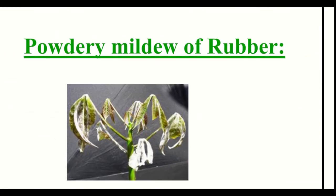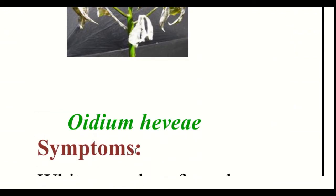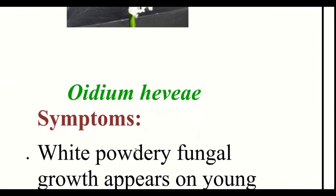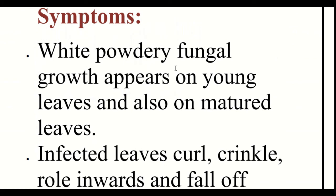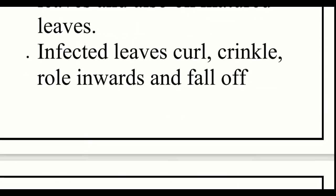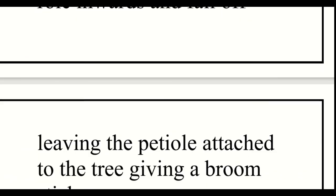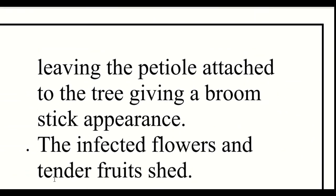The next disease is Powdery Mildew of Rubber. The causative organism is Oidium heveae. Symptoms: white powdery fungal growth appears on young leaves and also on matured leaves. Infected leaves curl, wrinkle, roll inward and fall off, leaving the petiole attached to the tree giving a broomstick appearance.